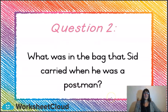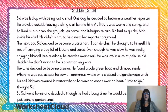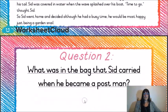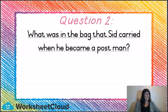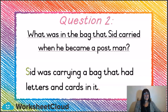Question 2: what was in the bag that Sid carried when he was a postman? You can always go back to the comprehension to look. He set off carrying a bag full of letters and cards. So the question said: what was in the bag that Sid carried when he became a postman? And the answer is: Sid was carrying a bag that had letters and cards in it. Can you see that's a full sentence? I didn't just write 'letters and cards' — that wouldn't have been a full sentence.